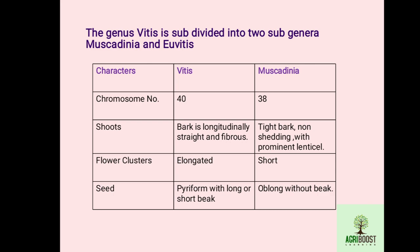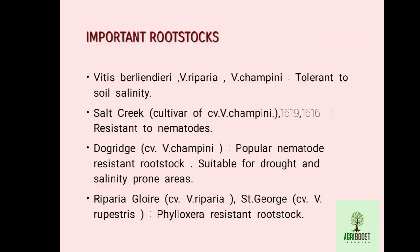Some important rootstocks of grape: Vitis berlandieri and Vitis riparia, and Vitis champini — these three rootstocks are tolerant to soil salinity. Other important rootstocks are Salt Creek, 1619, and 1616, which are resistant to nematode.